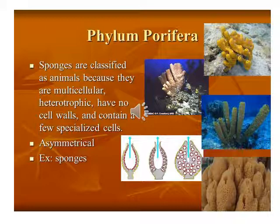These pores are known as ostia. The ostia take in water from the opening of the sponge, as you can see in the diagrams. The sponge has numerous pores through which food and oxygen enter and circulate within the body.